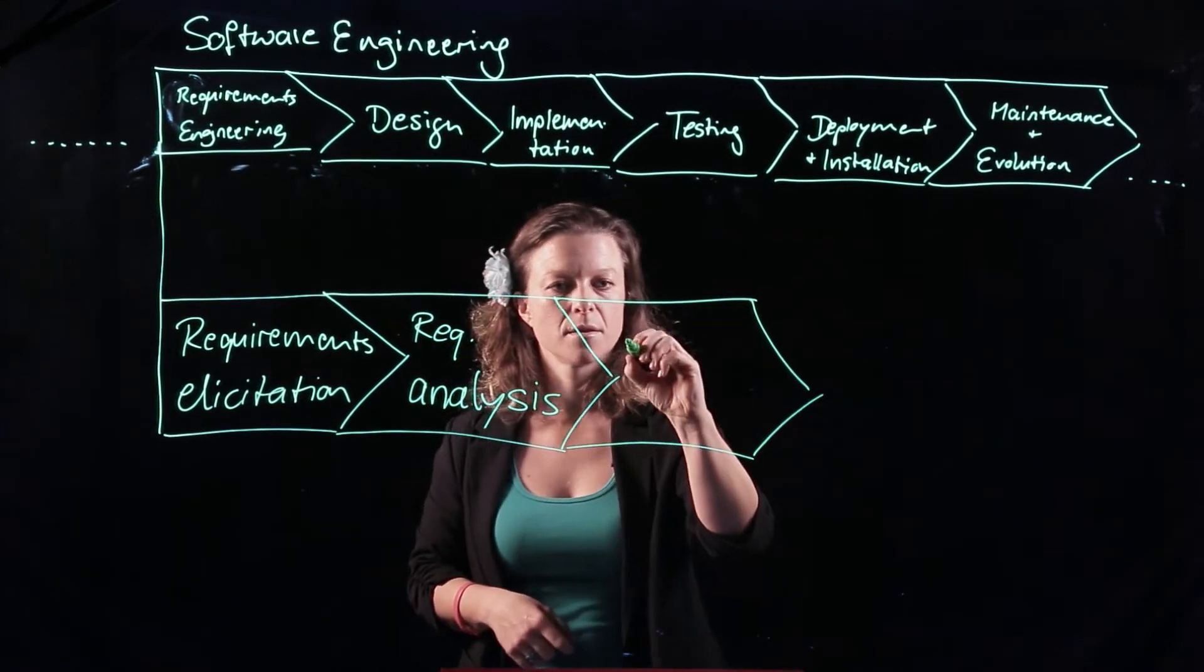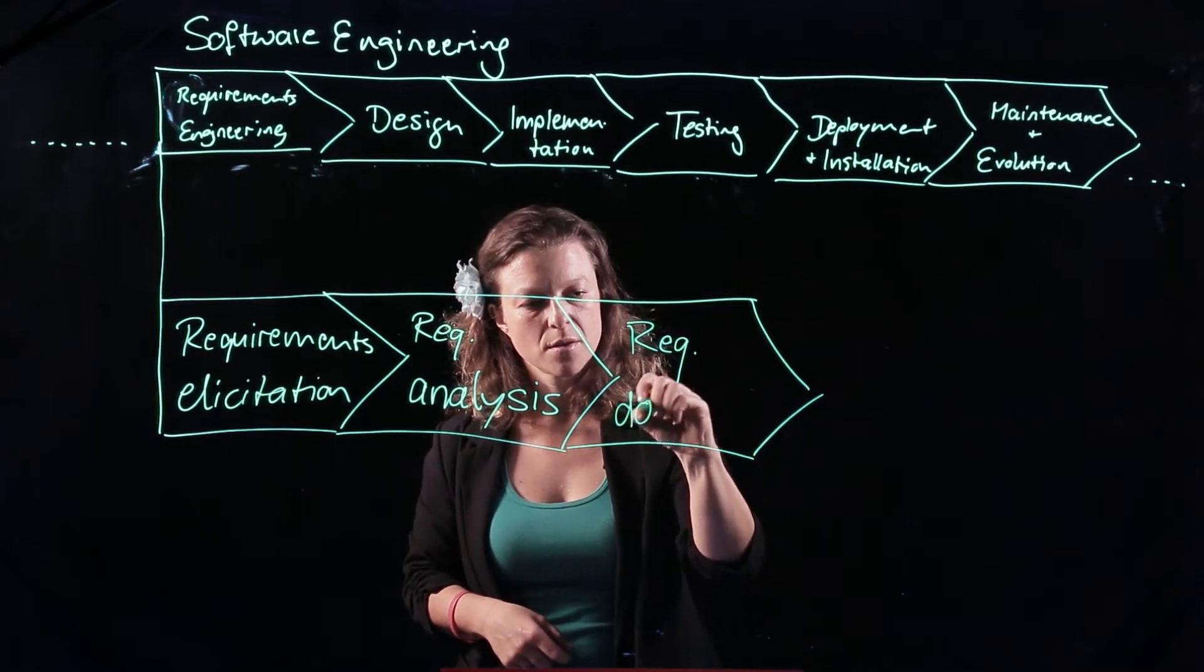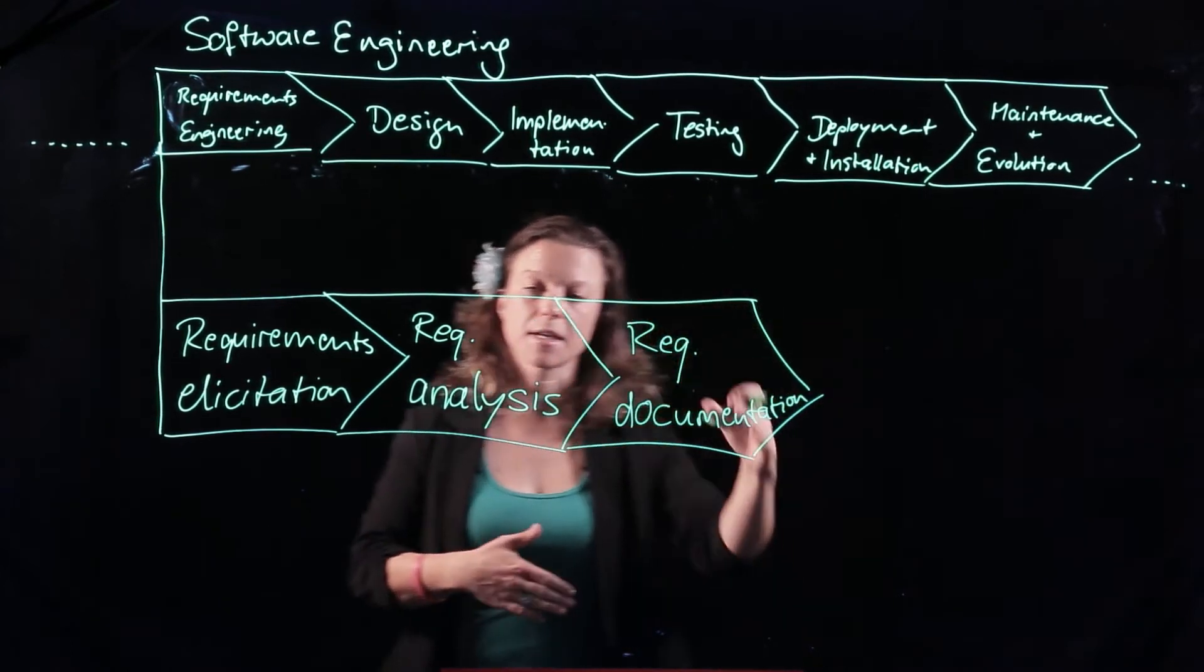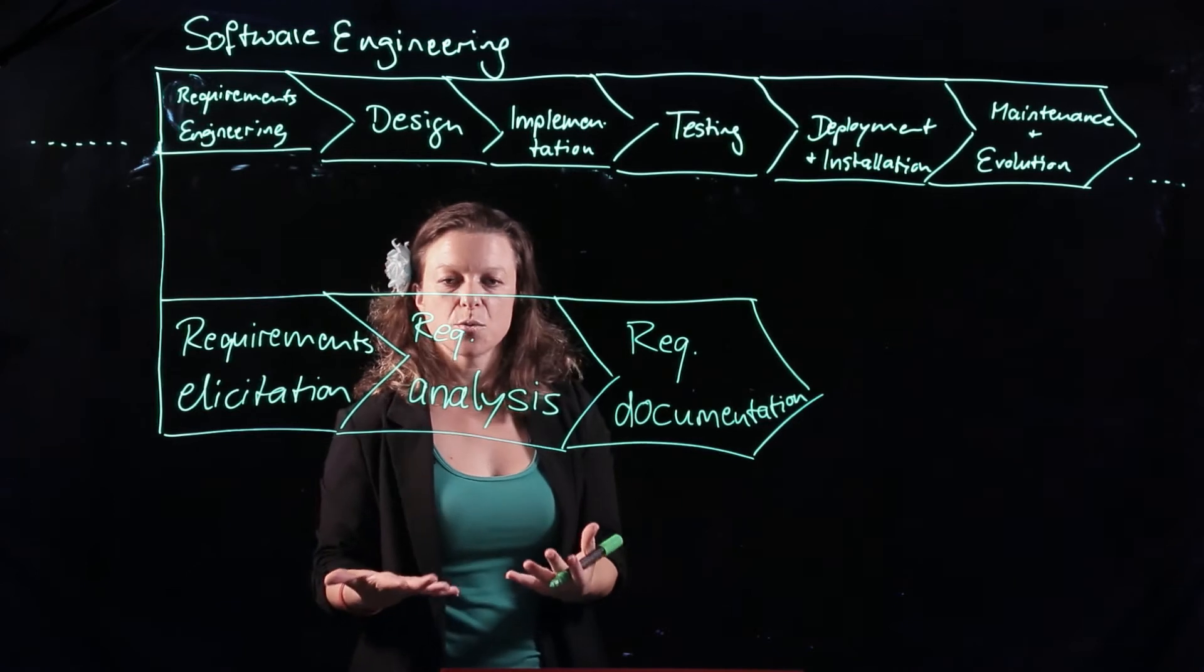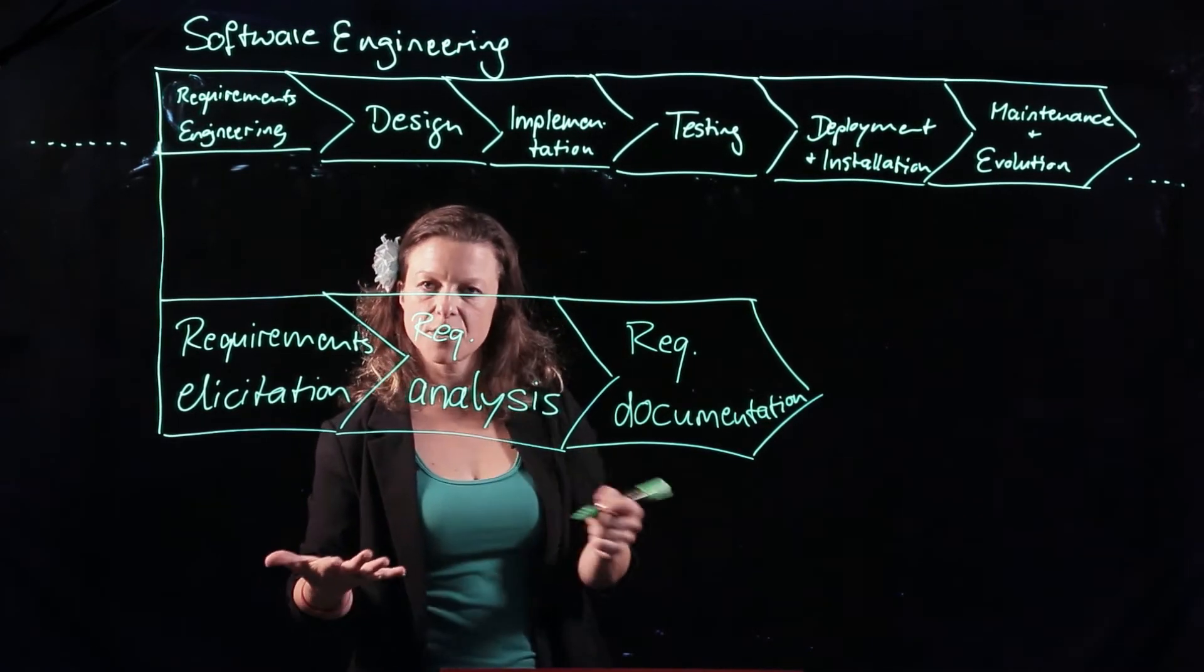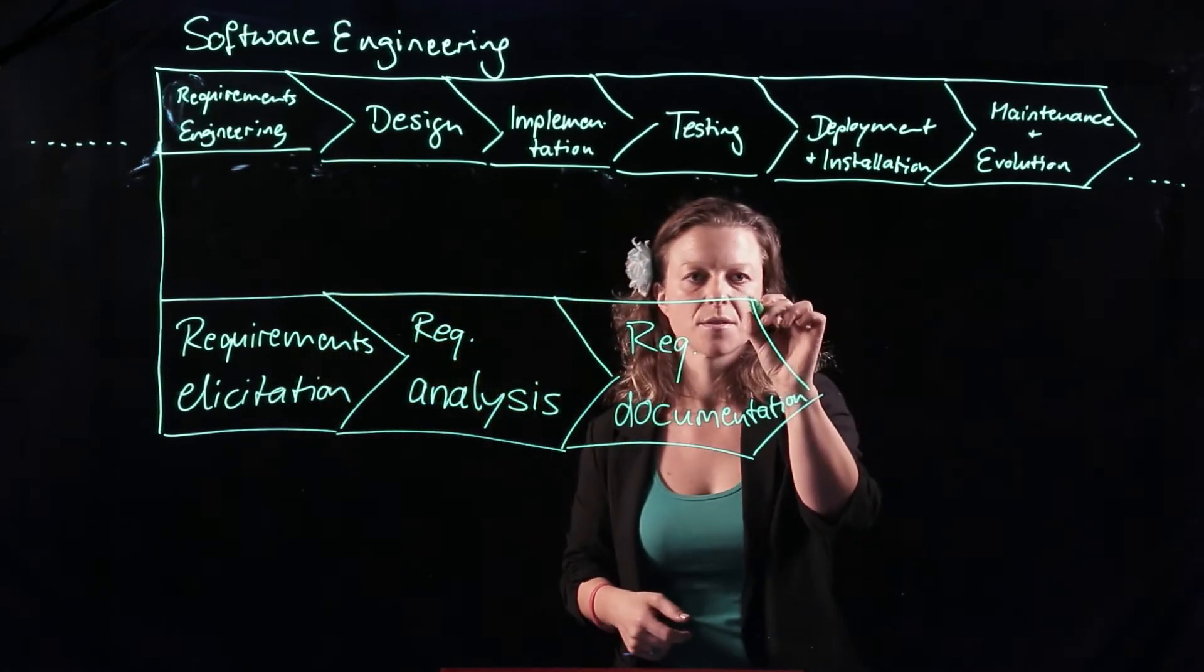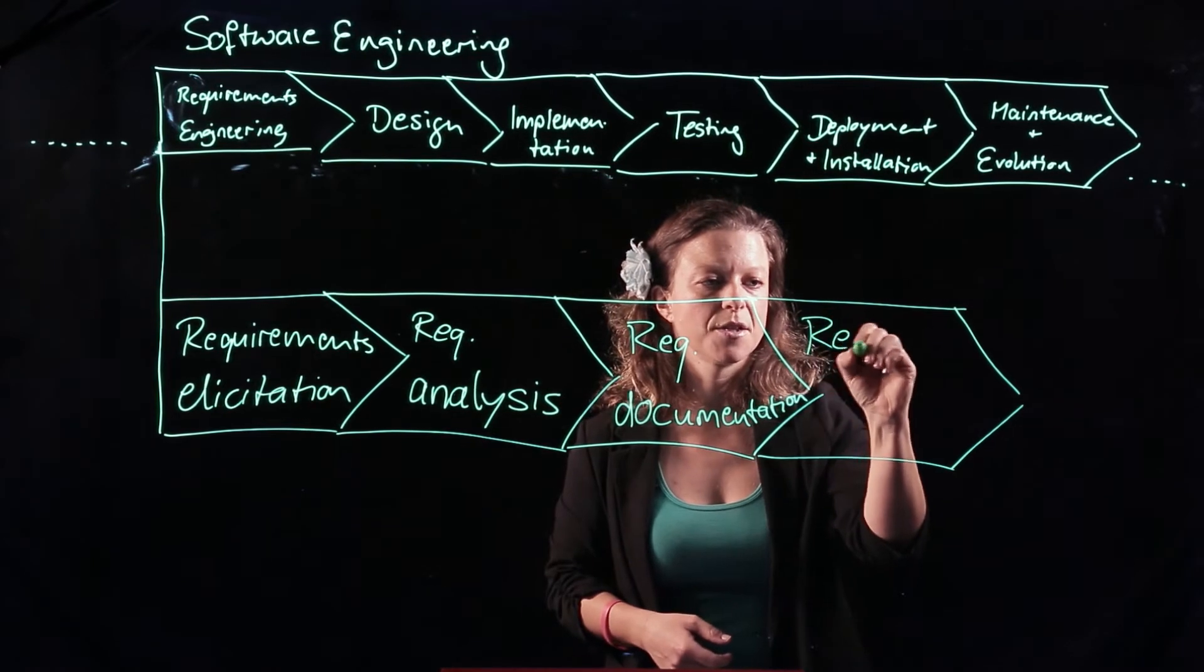Next phase is requirements documentation. That means I write it up in a way that I can go back to the stakeholders and say, this is how we understood what you were telling us. Are you going to sign off on this that we are supposed to develop the requirements on this basis? And doing that is called requirements verification and validation.